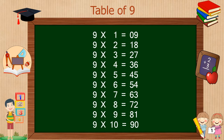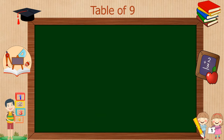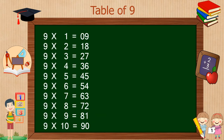So today I'm giving you two different tricks to remember and learn the table of 9. Let's see the tricks one by one. If you look closely at the table of 9, the digits in the left column appear from 0 to 9 sequentially from top to bottom.